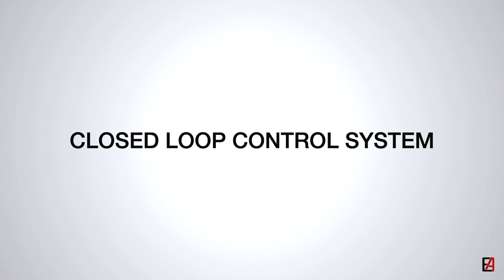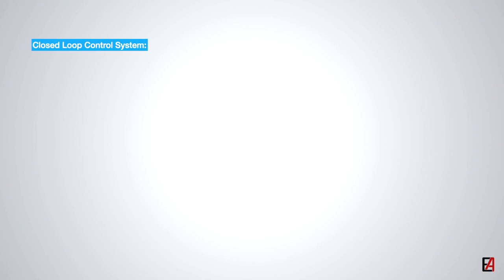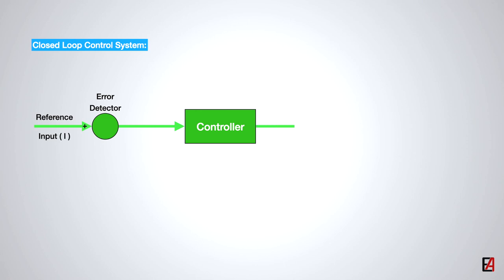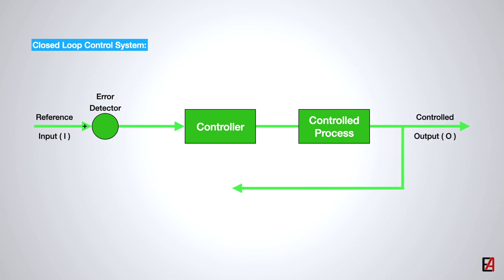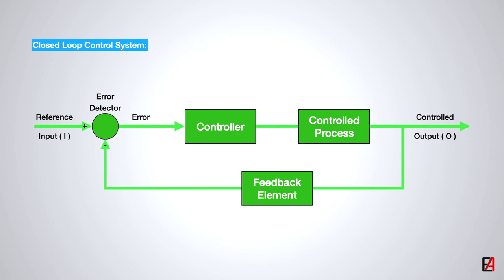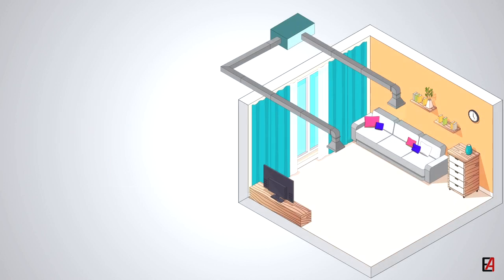What is missing in the open loop control system for more accurate and adaptable control is a link of feedback from the output of the system to the input of the controller. In order to obtain more accurate control, the control process must be fed back and compared with the reference input. Then the controller will decide how much actuating signal is required to achieve the desired output, and will actuate the signal until the error becomes negligible.